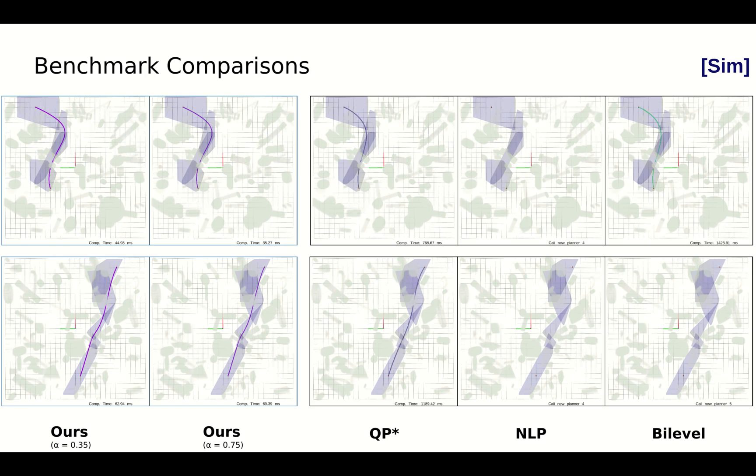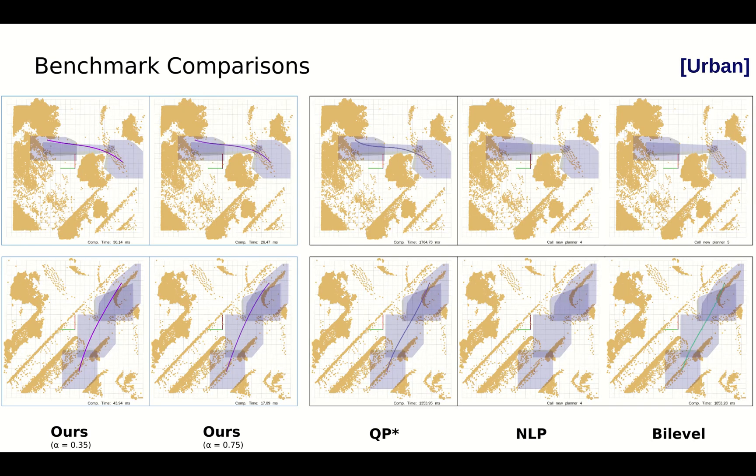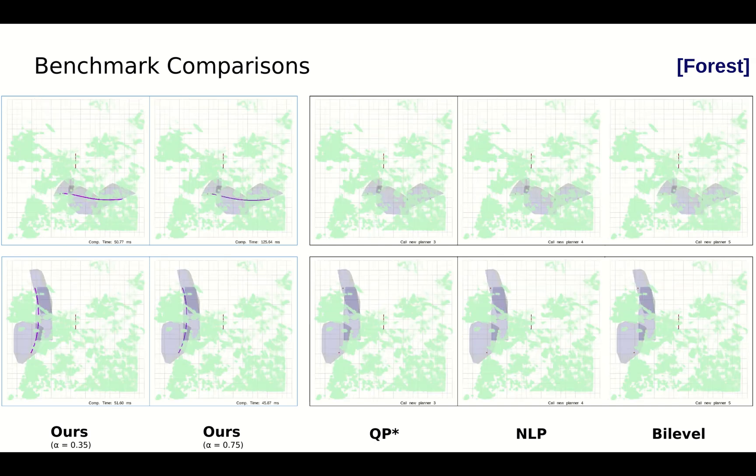By providing the same corridors, these visualizations show generated trajectories and computation times of different methods. Our framework is the fastest to get the optimal trajectory, where the nonlinear optimization can hardly converge in a limited time.